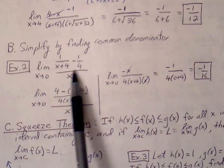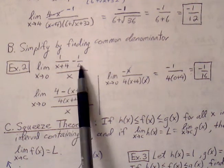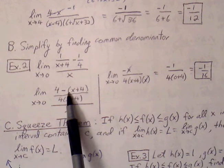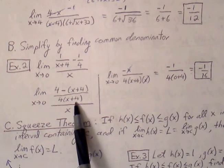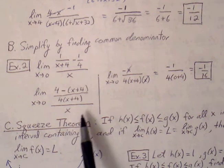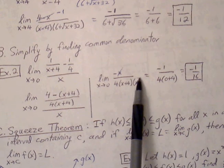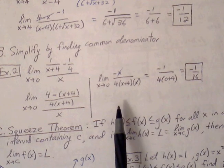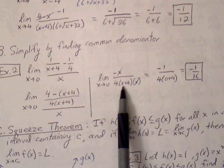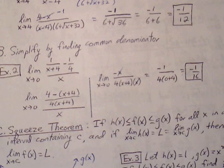Looking at the expression above the x, we find a common denominator of 4 times (x plus 4). Once we do that, we balance the numerators, making it 4 minus (x plus 4) over 4(x plus 4), all over x. This simplifies to negative x over 4(x plus 4), and we can move the x up to share the denominator, so the x's cancel nicely. Re-plugging in x equals 0, we get 4 times 4 which is 16 in the denominator, and the numerator is just negative 1. So our limit is negative 1 over 16.